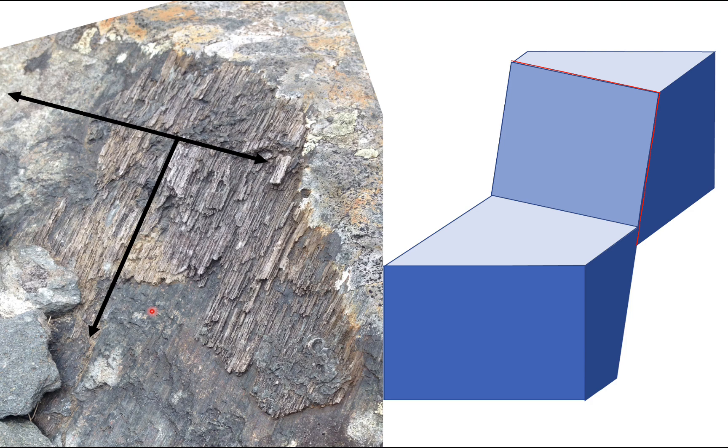So if you see slickenside, when you rub your finger on them along the direction of the fibers, if it feels smooth, then you're moving in the direction of the missing block. So you're moving in the same sense of motion as the fault plane. So these are really good kinematic or direction indicators.